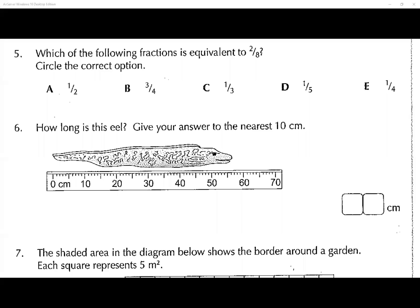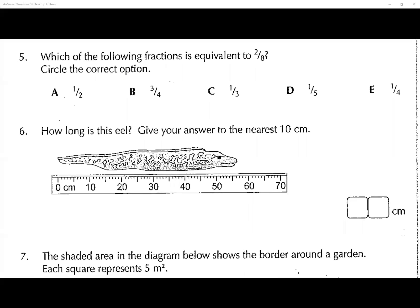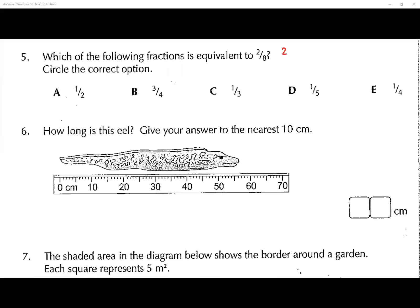Question number five: which of the following fractions is equivalent to two eighths? They're talking about cancelling — simplifying. We divide both by the biggest number that goes into both two and eight, which is two. That gives you one over four, so one quarter.